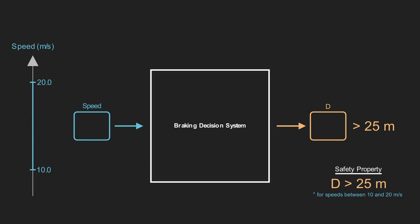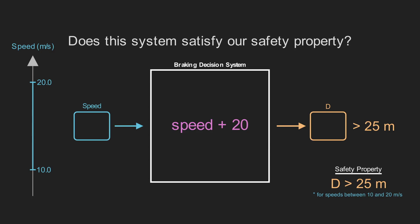Before we build up to verifying neural networks, let's try one other type of system. Instead of conditional statements, this design uses a simple mathematical formula. It adds 20 to the current speed and outputs the result as the braking distance. Does this system satisfy our safety property? Feel free to pause the video again to decide for yourself.